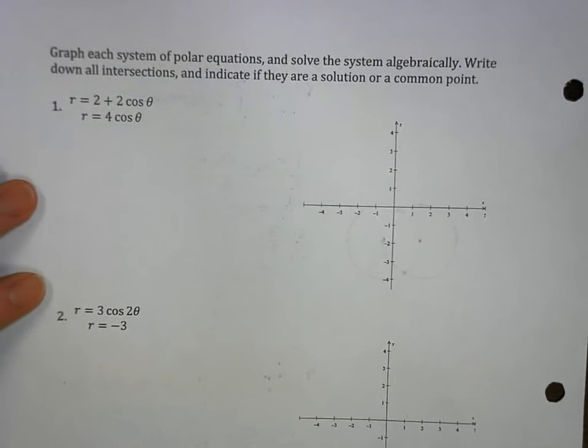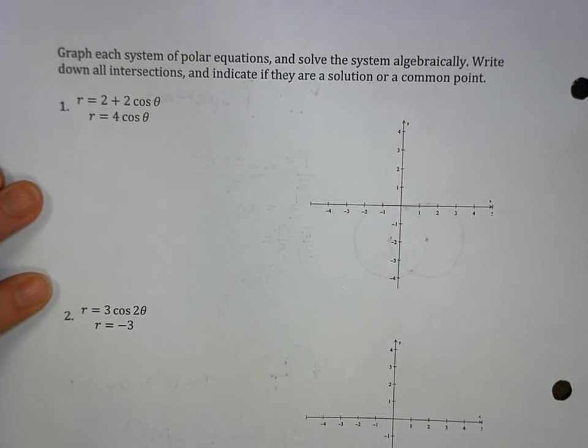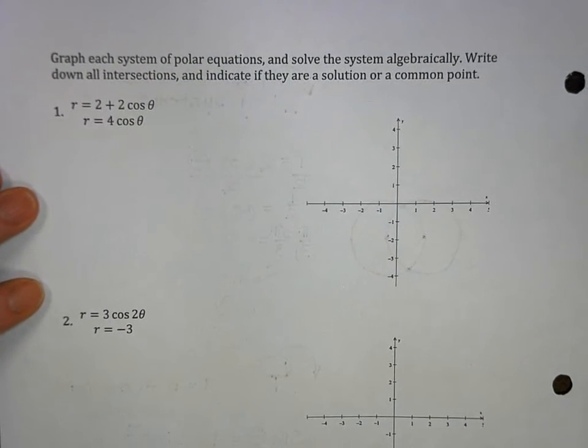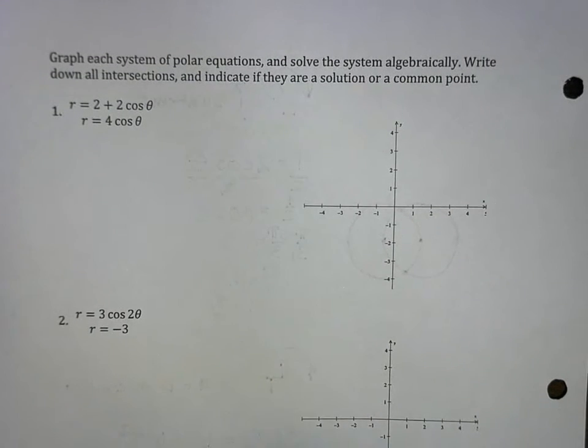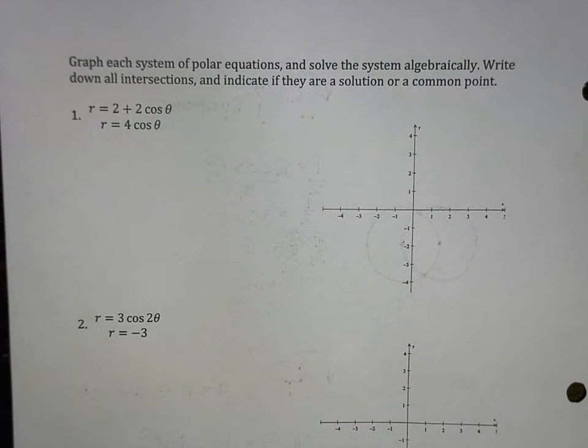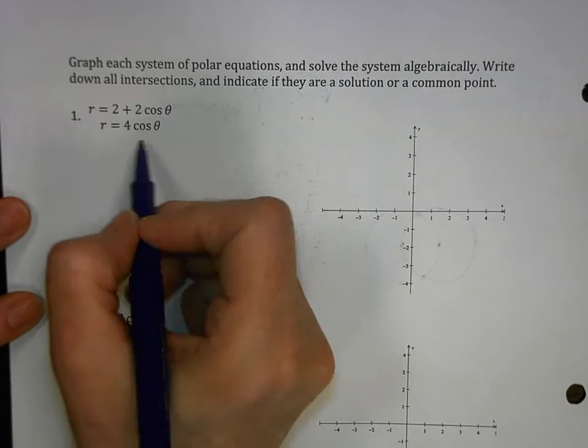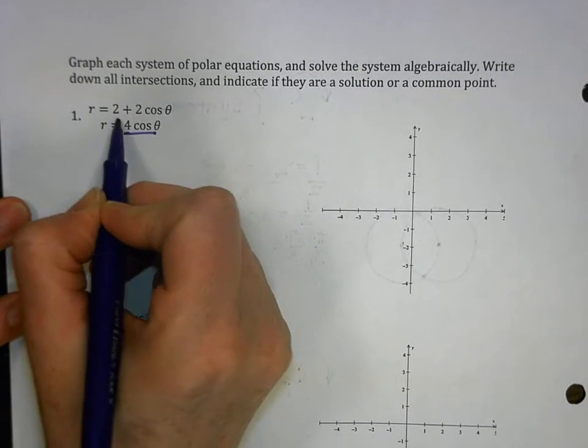Keep going. Let's do some examples. If you guys needed to turn it back or slow down the tape, that's fine. So graph each system of polar equations. Solve algebraically. Write down all the intersections and decide if they're common or not. So now we're just going to get right to it. We're going to say substitute. This is going to go right into here.